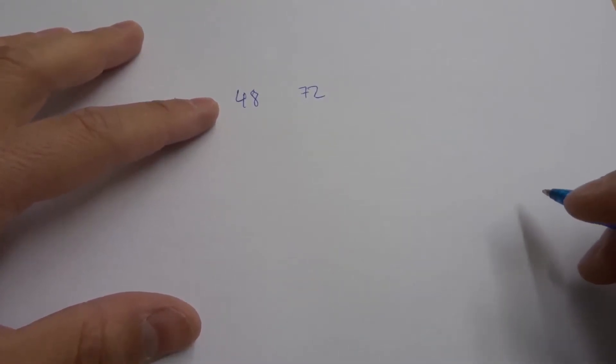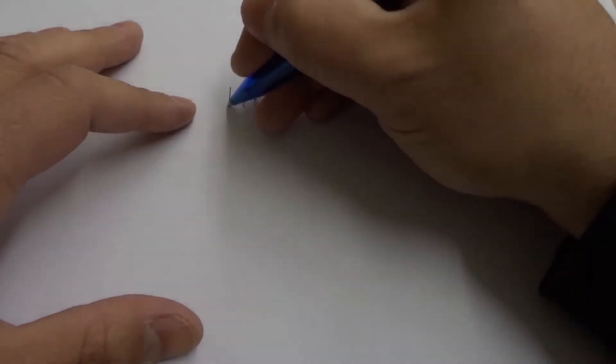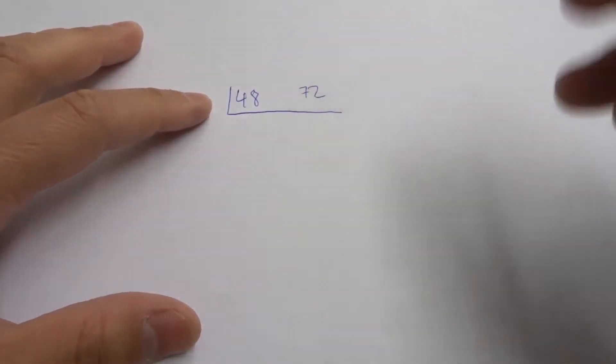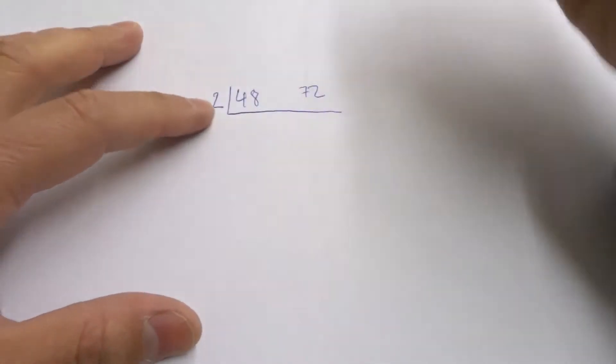Now what we want to do is we want to start off by finding the smallest prime number that goes into both numbers. So I'm going to draw a little L like this. And we want to find the smallest prime number that goes into both numbers, which in this case is going to be 2. Okay, so I put a 2 on the side there.